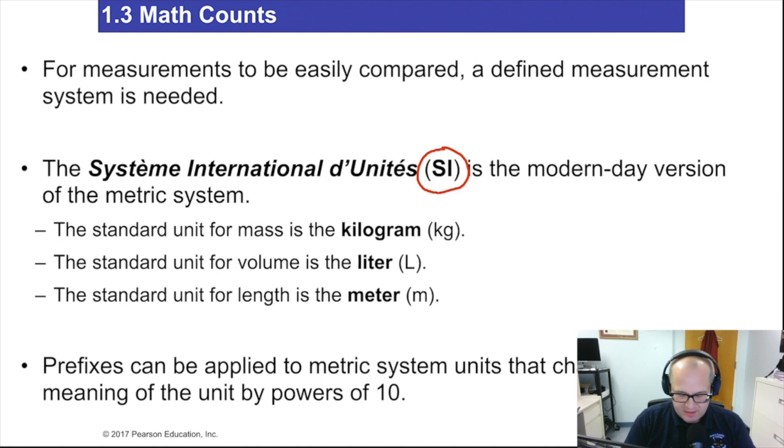So in the SI system, the standard unit for mass is the kilogram. The standard unit for volume is the liter. And the standard unit for length or distance is the meter. This is the standardized metric system. In essence, I just call it the metric system because that's pretty much what it is.